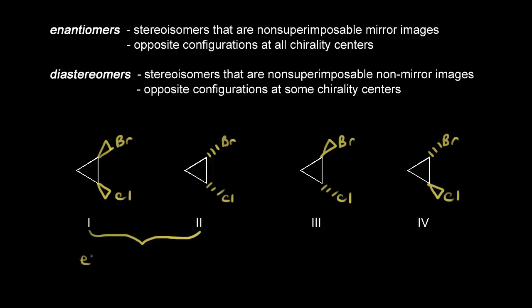So one and two are enantiomers — non-superimposable mirror images — and they have opposite configurations at all chirality centers. At this carbon, bromine is on a wedge, and in the other it's changed to a dash. At the other chiral center, chlorine is on a wedge and here it's changed to a dash. Opposite configuration at both chiral centers confirms they are enantiomers.